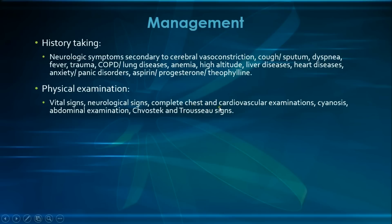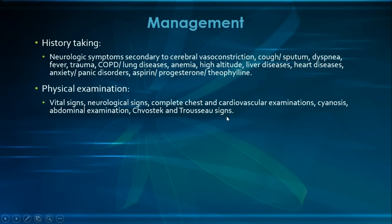We would conduct a complete chest and cardiovascular examination, both very essential to look for any underlying lung or heart diseases, as hypoxemia causes are very common in respiratory alkalosis. Then look for any cyanosis, which also indicates hypoxemia. We would conduct a quick abdominal examination looking for any signs of liver disease. Finally, we would elicit the Chvostek and Trousseau signs looking for hypocalcemia, as the alkalosis will decrease the free ionized calcium because more calcium is bound to albumin. The total body calcium will of course remain normal.